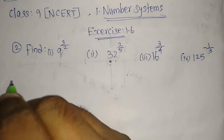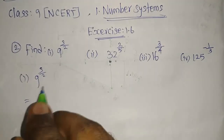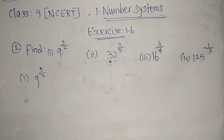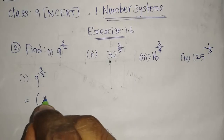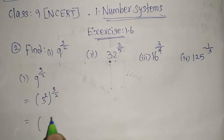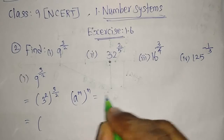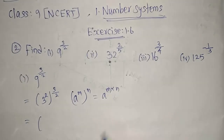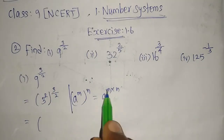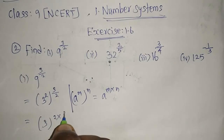Now we will see the first question: 9 whole power 3 by 2. Since 9 is a perfect square, it is easy. I am going to write 9 as 3 squared, so it becomes 3 square whole power 3 by 2. This is in the form of a power m whole power n, which equals a power m into n. So I multiply the powers: 3 power 2 into 3 by 2.